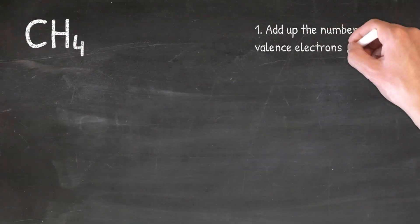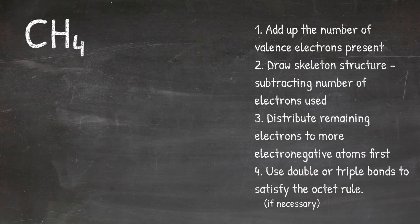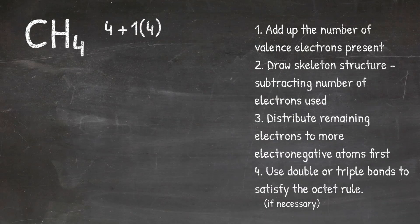In our first example, we will look at drawing a Lewis structure for CH4. Step number one is to add up the number of valence electrons present. In CH4, I have a carbon and four hydrogens. Using my periodic table, I know that carbon has four valence electrons, and each hydrogen has one valence electron. Because I have four hydrogens, I multiply that one by four. When I add these together, I get a total of eight electrons. It's important to do this step correctly because eight is the number of electrons we can use on our structure — no more and no less.